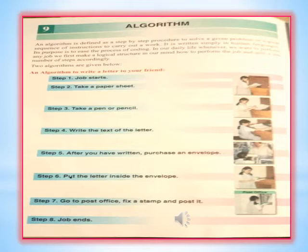In the computer, we take these steps into coding, and through this coding, whenever we need that task, it is followed as-is. Normally, when we talk about algorithm, whenever we are doing any task, we prepare a structure and those steps in our mind which are to be followed to complete the task.